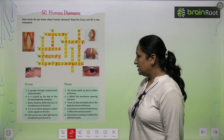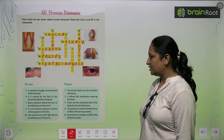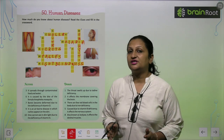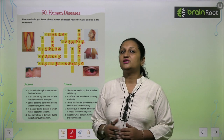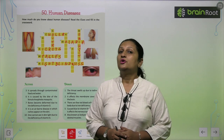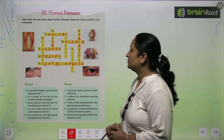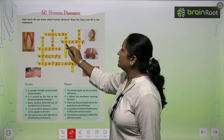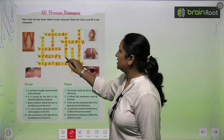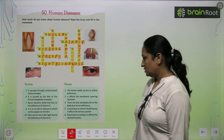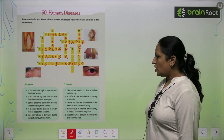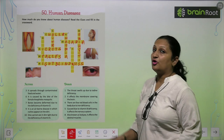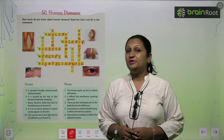See the next one: There are few red blood cells in the body due to iron deficiency. Due to iron deficiency in the body, the disease is called Anemia.